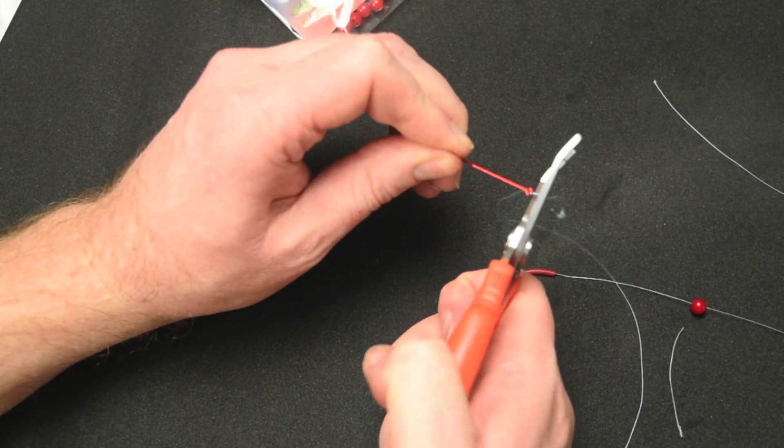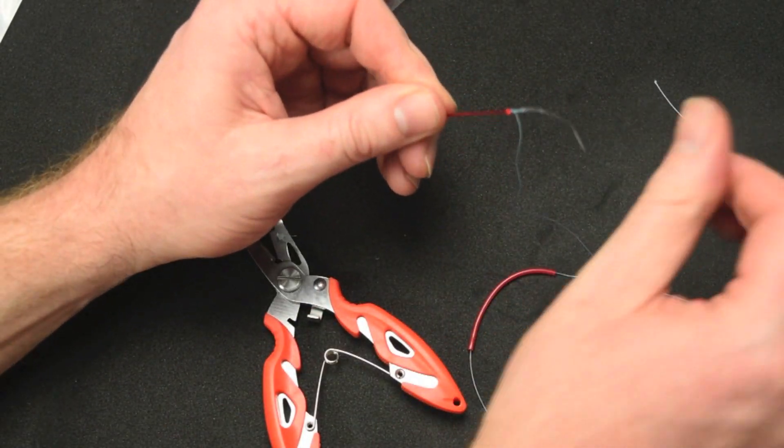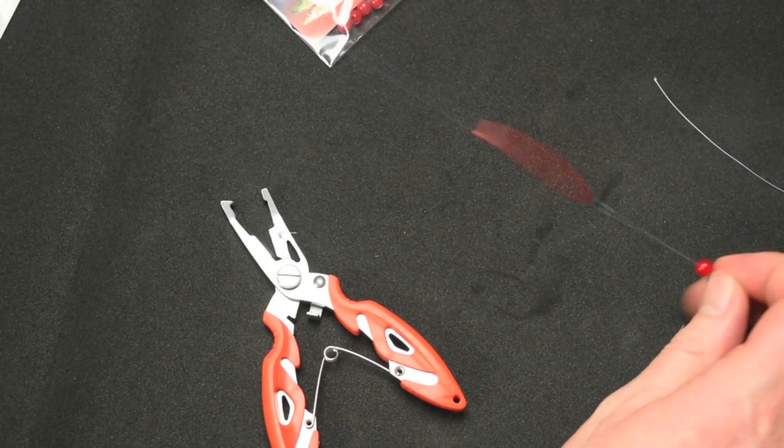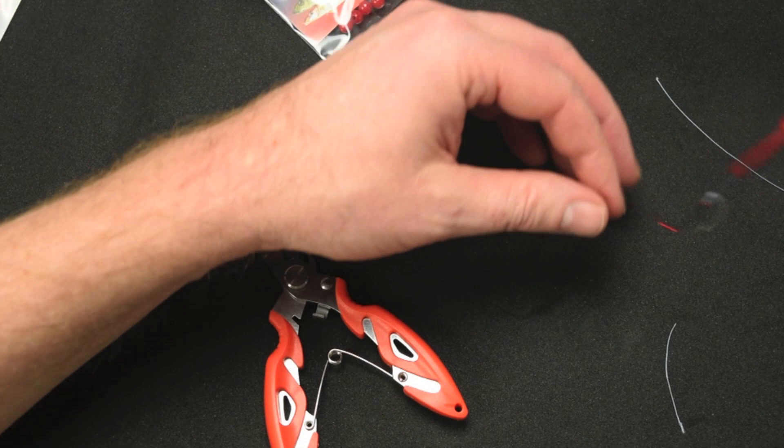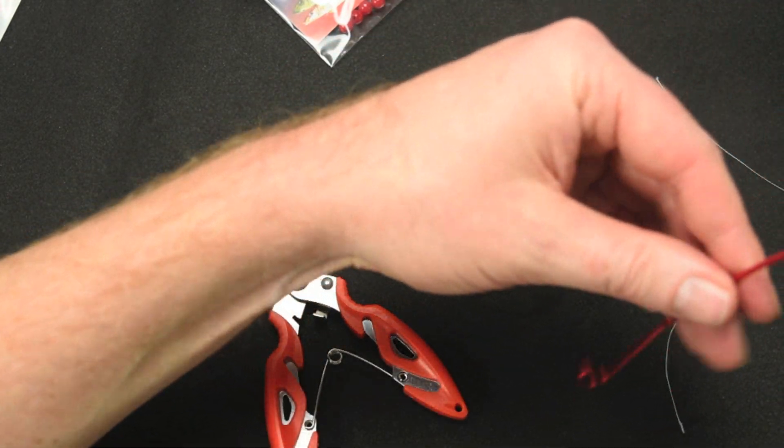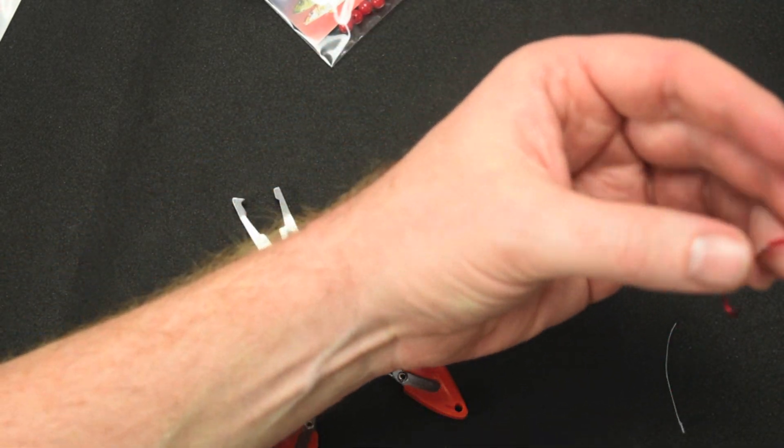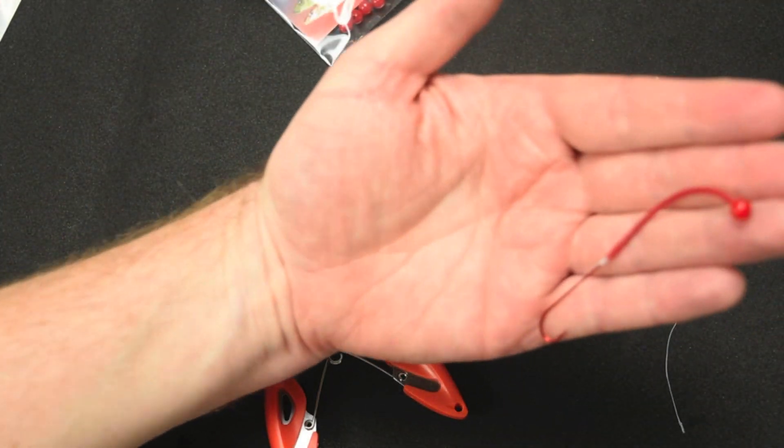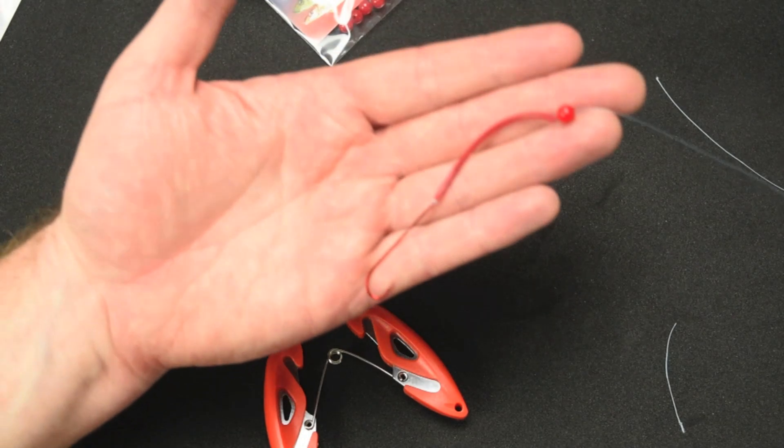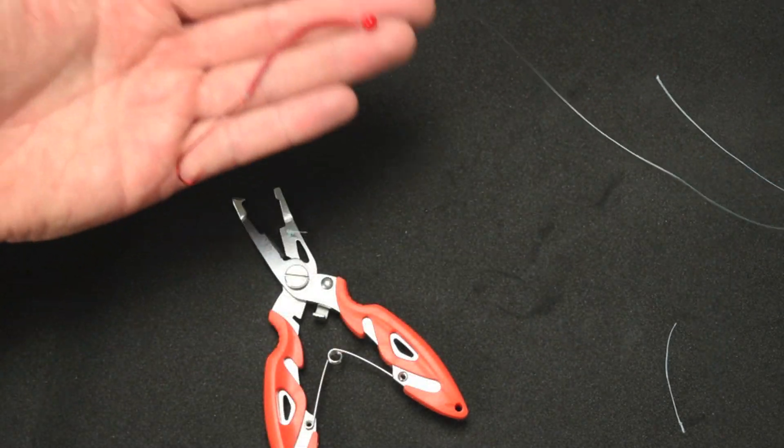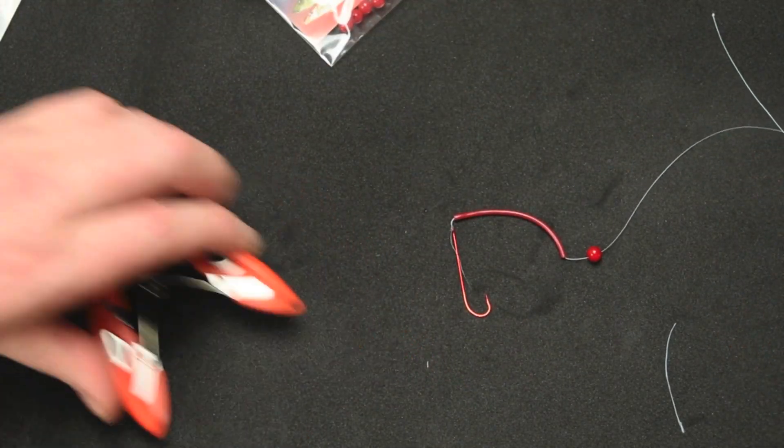Give that a twist. Come through the eye. Make it out a loop. Once it comes into a loop push it back through that loop. Always lubricate your knots. That's it. And trim your tag.